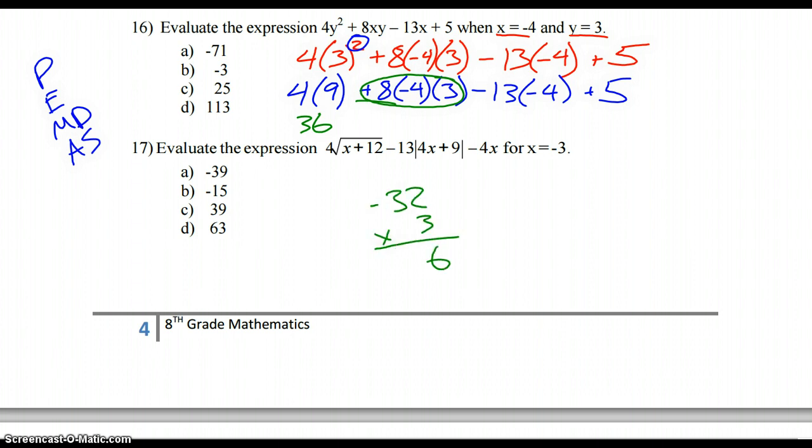8 times negative 4 is negative 32. And then times the 3, we get negative 96. So minus 96 or plus negative 96, whatever you want to do. And then this part, I would consider both of these negative. Negative 13 times negative 4. So we'd do 4 times 13, which comes out to 52. So plus 52 when you multiply two negatives. And then we have a plus 5 on the end there.